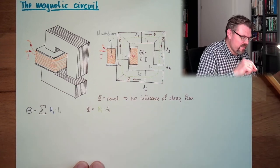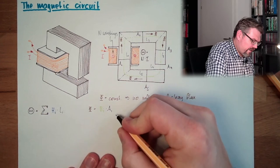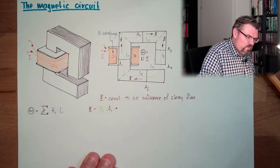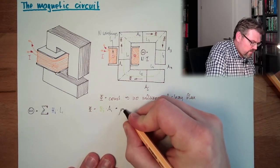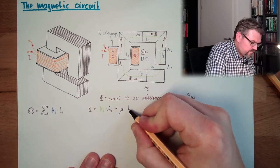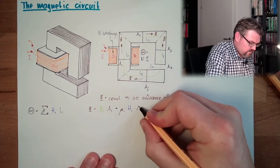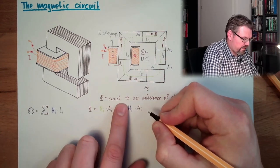And since phi equals mu multiplied by H, we end up that we say we have here mu i multiplied by Hi multiplied by Ai. This is phi here.